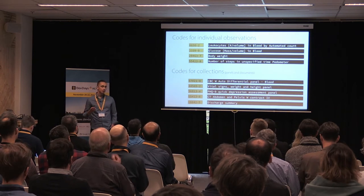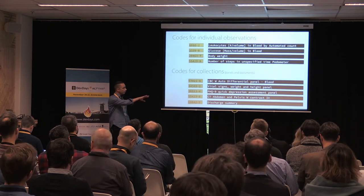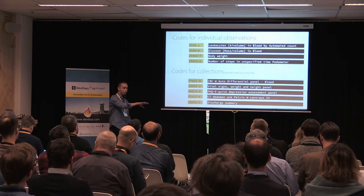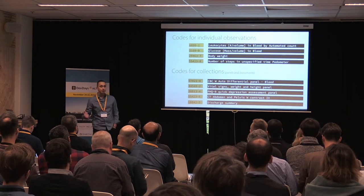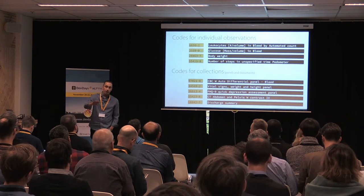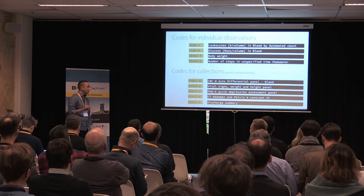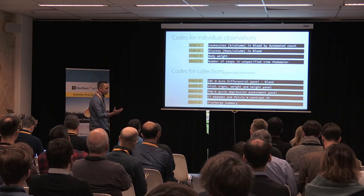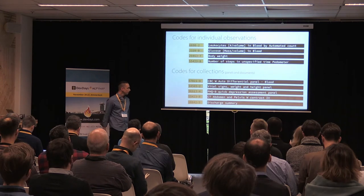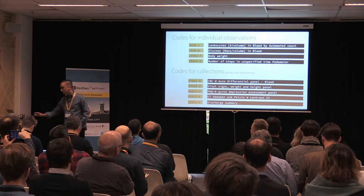We typically distinguish between two kinds of collections: panels, where the collection is an enumerated set of results — think of a CBC laboratory test that has different variables for red blood cell count, white blood cell count, et cetera — as well as collections where the organization of information is more loosely structured, such as what you might find in a narrative radiology report or a discharge summary.